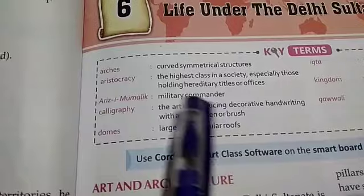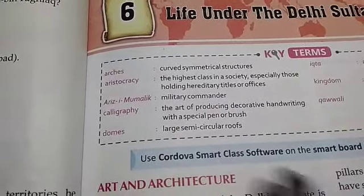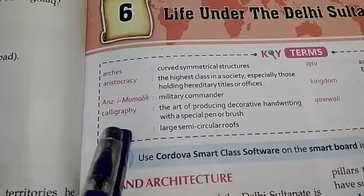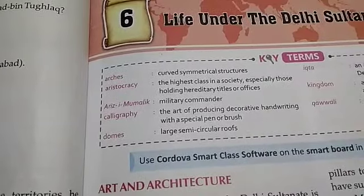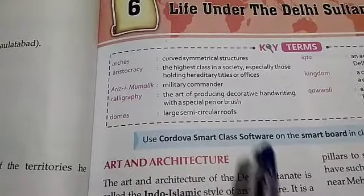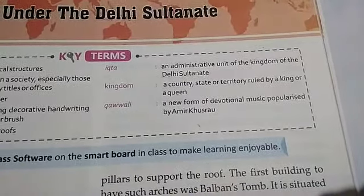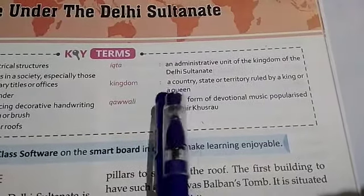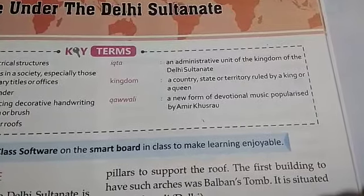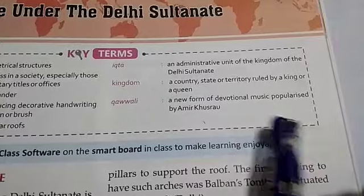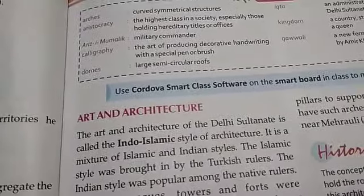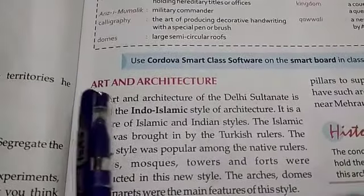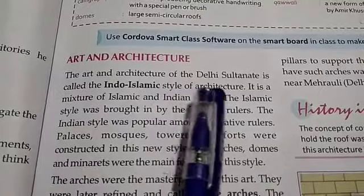Arz-ul-Mamalik — military commander. Calligraphy — the art of producing decorative handwriting with a special pen or brush. Domes — large semi-circular roofs. Ekta — an administrative unit of the kingdom of the Delhi Sultanate. Kingdom — a country, state, or territory ruled by a king or queen. Kawali — a new form of devotional music popularized by Amir Khusrau.